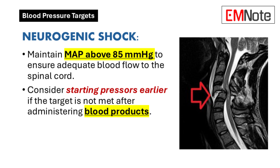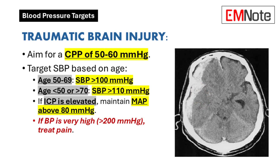For neurogenic shock, mean arterial pressure should be maintained above 85 mmHg to ensure adequate spinal cord perfusion. Early vasopressor initiation should be considered when targets are not achieved with volume resuscitation. In traumatic brain injury management, cerebral perfusion pressure should be maintained between 50 and 60 mmHg.